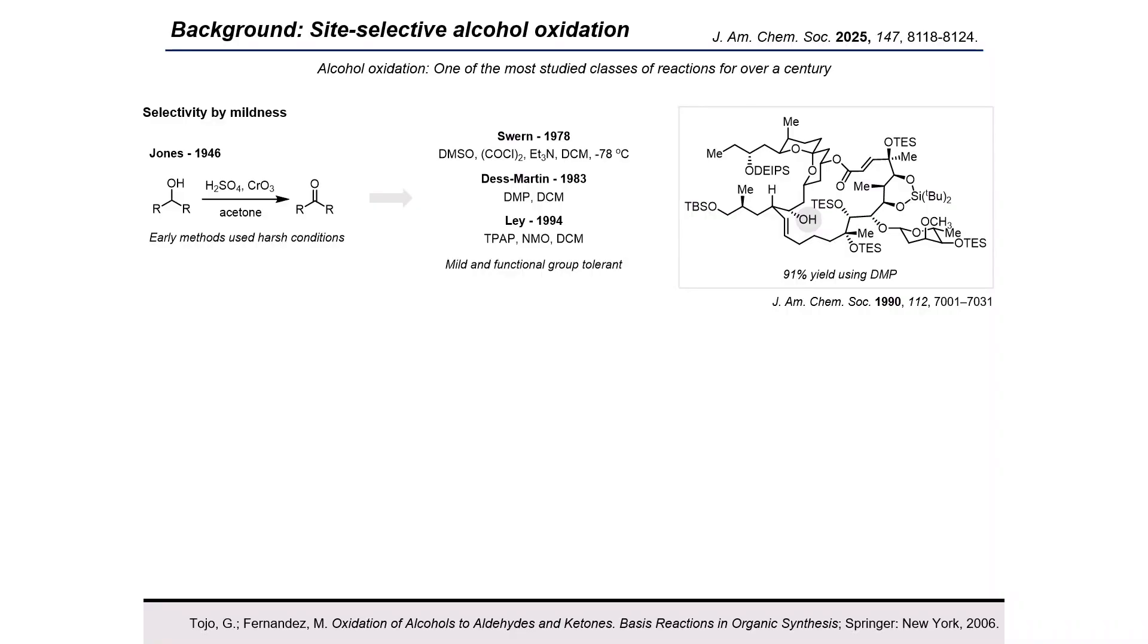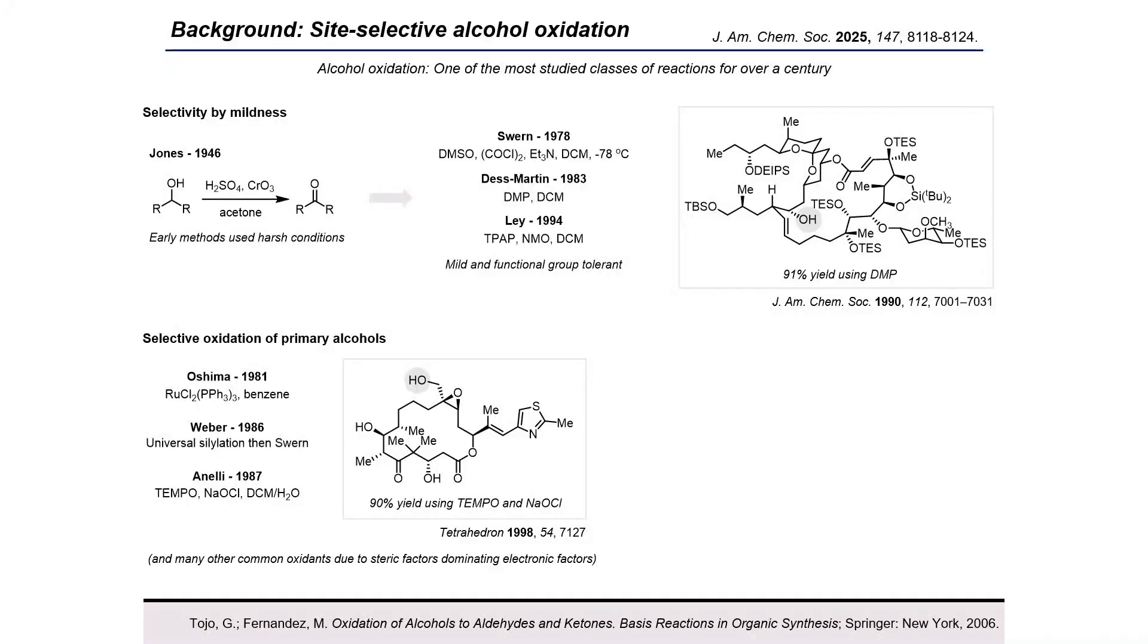Over the last century, there has been much work developing mild reagents to enable alcohol oxidation in complex settings. But if we focus on site-selectivity between two or more hydroxyl groups in the same molecule, I think we can categorize existing work into four classes of reactions. First, selective oxidation of primary alcohols over secondary alcohols, which is quite straightforward and most common oxidants can achieve good selectivity since the primary site is much more sterically accessible. Still, I've listed here a few conditions which are especially well suited for this transformation.